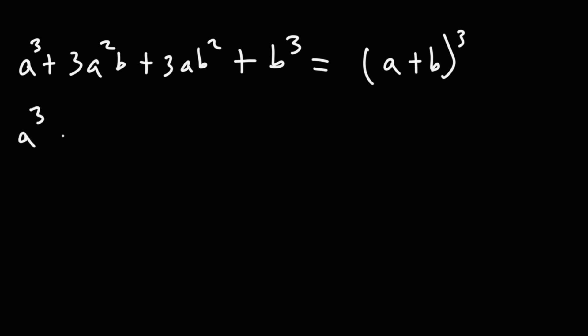Now, there's another variant where the signs are alternating. It's positive a cubed minus 3a squared b and then plus 3ab squared and then minus b to the third. So this is going to be a minus b to the third power.